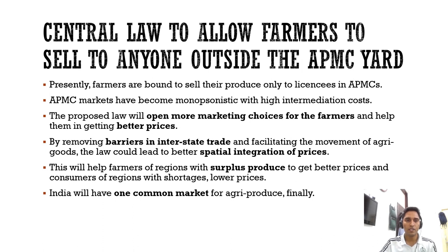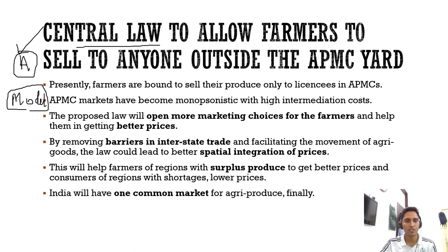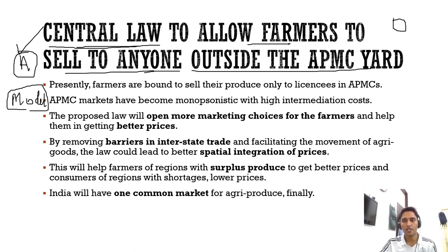Now the second measure: the government has announced they will bring a central law. Although agriculture is a state subject and states can enact their own laws, the centre makes model laws — for example the APMC Model Act. The new central law will allow farmers to sell to anyone outside the APMC yard. Currently farmers are bound to sell only to licensees in the APMC mandis, and APMC markets have become monopolistic.